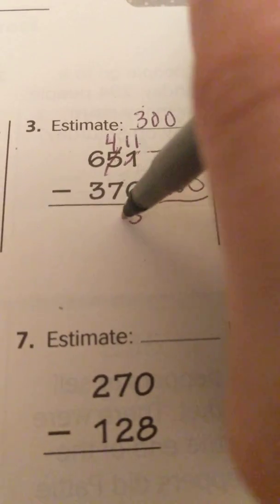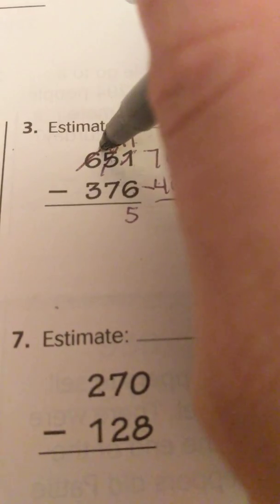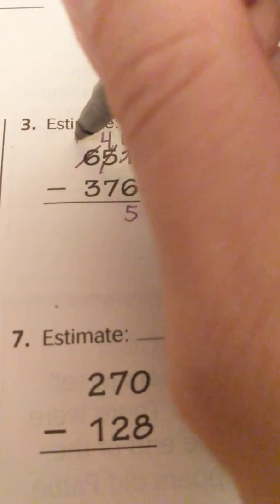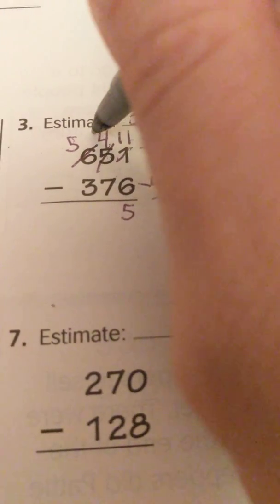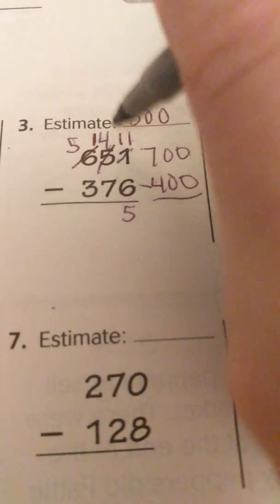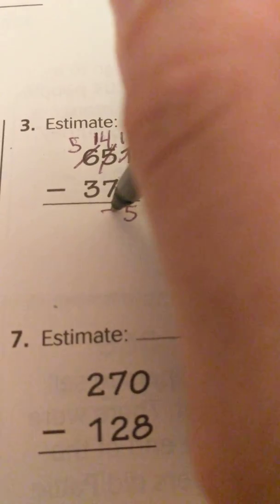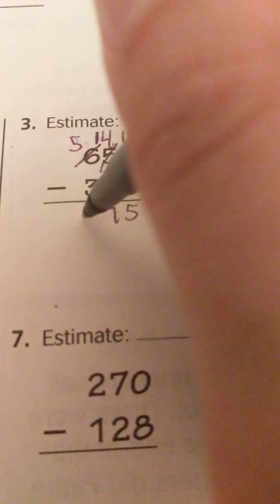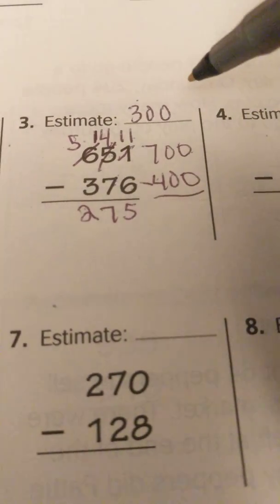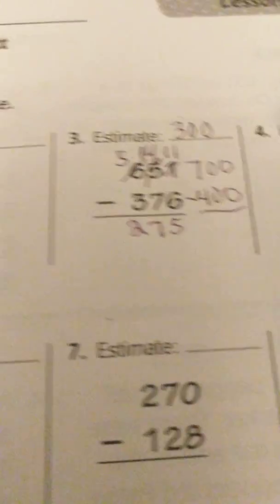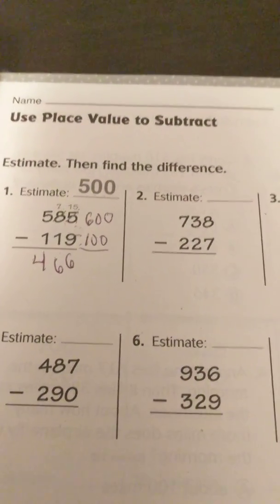4 minus 7 we can't do, so we need to regroup again. So I'm going to take 100 and add 10 tens. So now 14 minus 7. 14 minus 7 is 7, and 5 minus 3 is 2. And the answer is 275. And that is how we use place value to subtract.